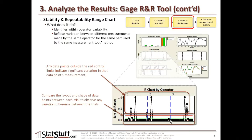Most of them are within the control limits. So it looks to us that most of the variation is not restricted to something within each operator's process, but as noted in the session window, most of it can be related to part to part. So this might be considered acceptable.